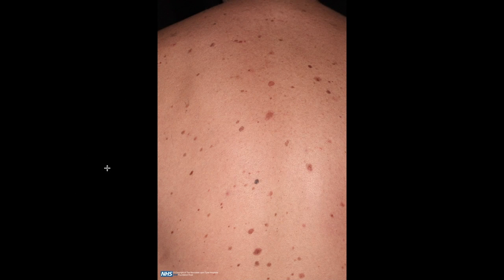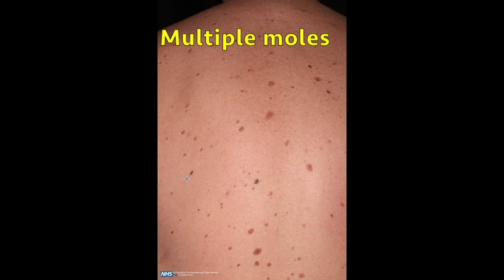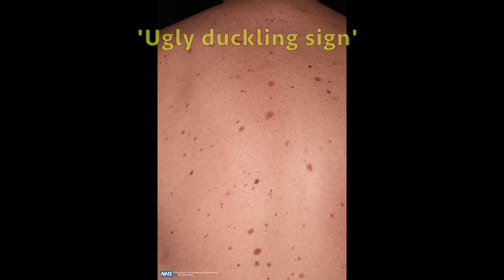This image shows the back of a relatively young looking patient. What's striking is that they probably have close to 50 moles just in this field of view, and we know that large numbers of nevi are associated with an increased risk of malignant melanoma. In this case the lesion in the middle of his back tends to stand out, which we refer to as an ugly duckling sign.